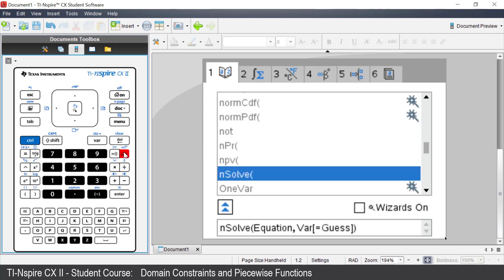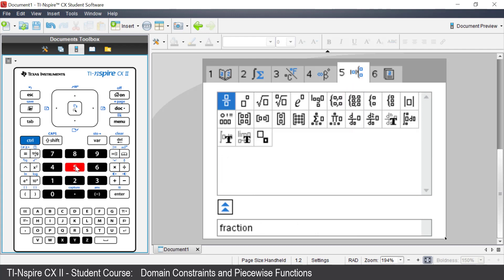Press the catalog. Press 5 to open the templates menu. As you progress along the row, the description of the template is shown in the bottom row. There is the two piecewise function and then there is the n piecewise function. We are graphing a two piecewise function. Press enter.